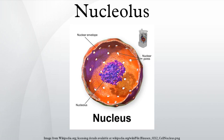The nucleolus ultrastructure can be visualized through an electron microscope, while the organization and dynamics can be studied through fluorescent protein tagging and fluorescence recovery after photobleaching. Antibodies against the PAF-49 protein can also be used as a marker for the nucleolus in immunofluorescence experiments.